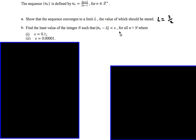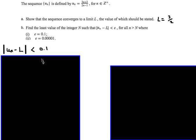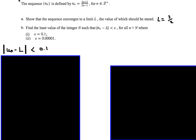The second part says: find the least value of the integer capital N such that the absolute value of u_n minus L is less than epsilon for all n greater than capital N, where epsilon equals 0.1. It looks complicated, but if we break it down: epsilon is 0.1, and L is 3 over 2 from the previous part. So we substitute those values in — u_n minus 3 over 2 is less than 0.1.